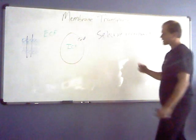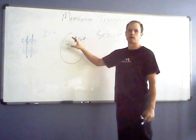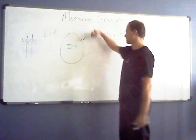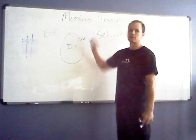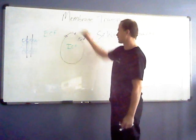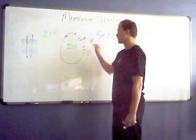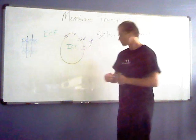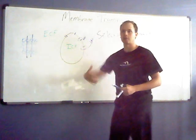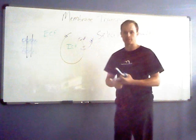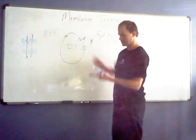Cells can make themselves more permeable to a substance — let's use sodium as an example — by producing more proteins to add more sodium gates to the cell membrane. If we add more open sodium gates, more sodium can flow into or out of the cell. A cell can also become less permeable by taking away gates. Cells do this all the time, adjusting their permeability based on the environments they're in and the needs of the cell.